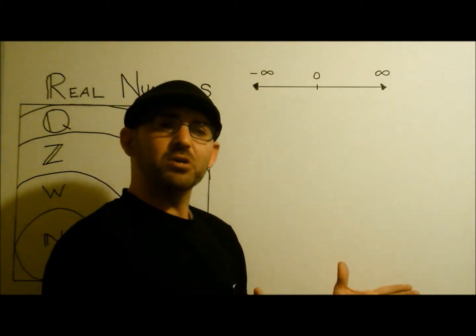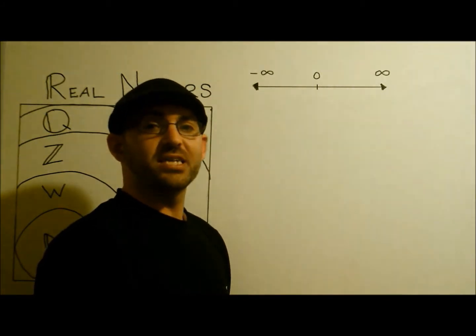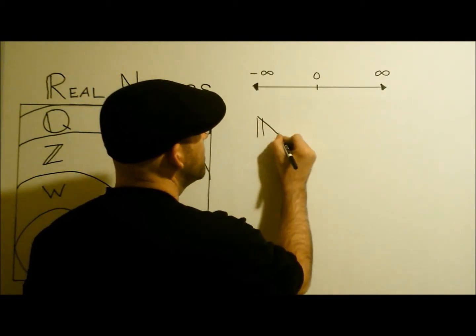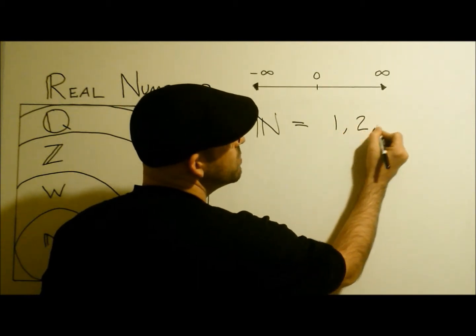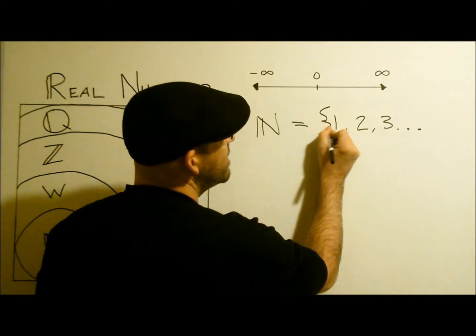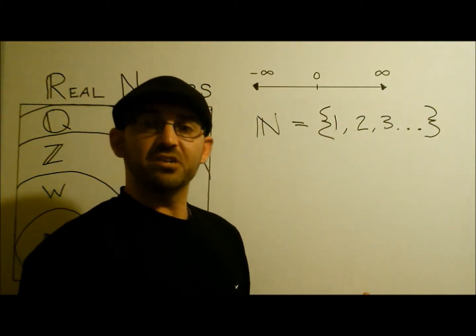Well, what kind of numbers are inside the number line? We'll start with the natural numbers, also known as the counting numbers. It's signified by a large N here, and it starts with one, two, three, all the way to infinity. These are the natural numbers.